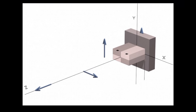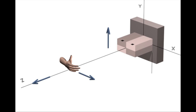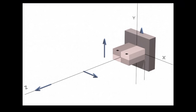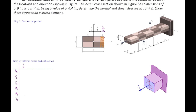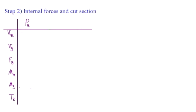What would be the direction of that moment? To determine that, we use the right-hand rule: put the fingers, align the force, curl the finger toward the direction of that cut section. The thumb shows the positive direction of y. So that would be a moment about the y-axis. And once it arrives to that point, it's a shear force along the x-axis.